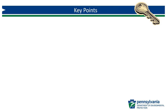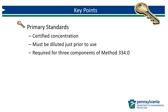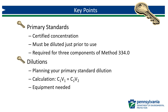Let's review the key points from this video. Primary standards are aqueous concentrated standards containing a certified concentration of free chlorine, and they must be diluted using reagent grade water just prior to use. Primary standards are required for three separate components of Method 334.0. In order to dilute them, it is important to first plan your dilution by calculating the appropriate volumes using the C1V1 = C2V2 formula. Before beginning, make sure you have all the necessary equipment and materials ready.